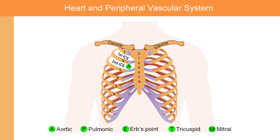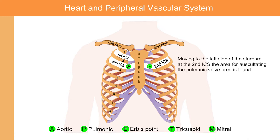Moving to the left side of the sternum at the second intercostal space, the area for auscultating the pulmonic valve area is found.